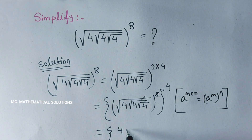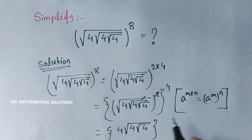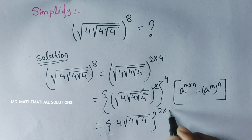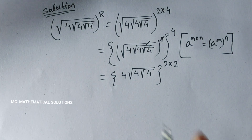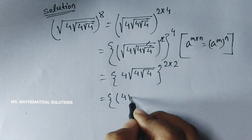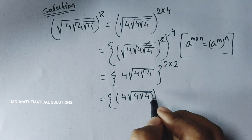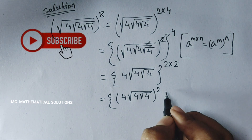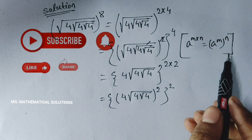So here we have 4 into root under 4, root under 4, root under 4, whole to the power 2, whole to the power 2. Here we use the same formula.